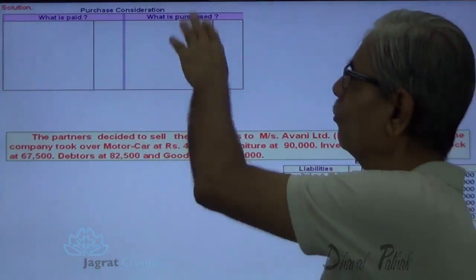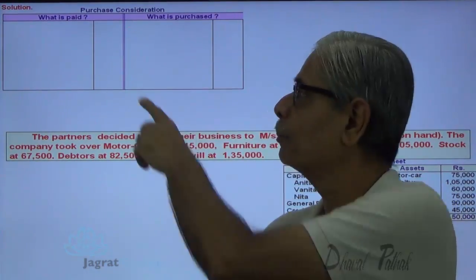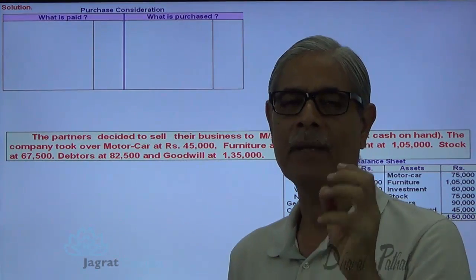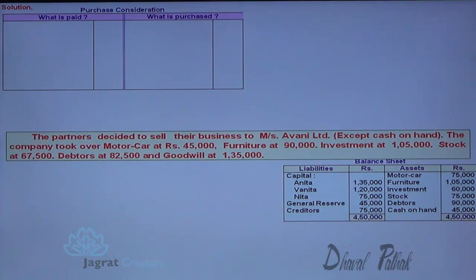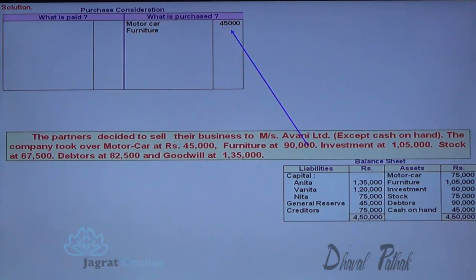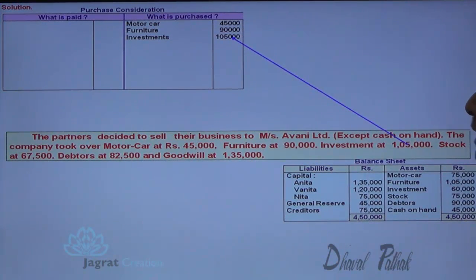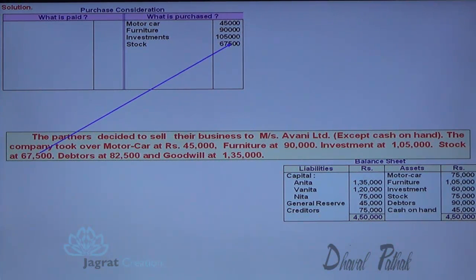Let us work out the purchase consideration statement. The assets and properties are purchased; net assets will be worked out, shares paid will be recorded, and the balance payment by way of cash will be determined. Motor car is sold at 45,000; furniture sold for 90,000, though its book value is 1,05,000; investments are sold at 1,05,000 — a profit of 45,000. Stock is sold for 67,500, so there is a loss on stock.